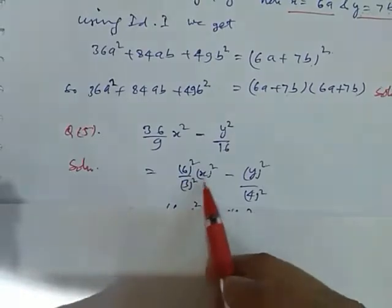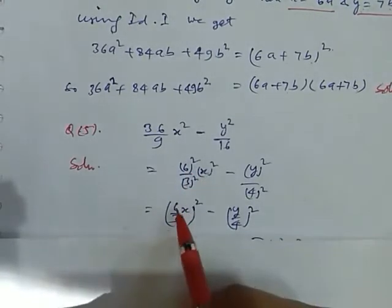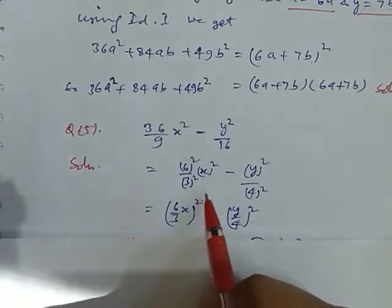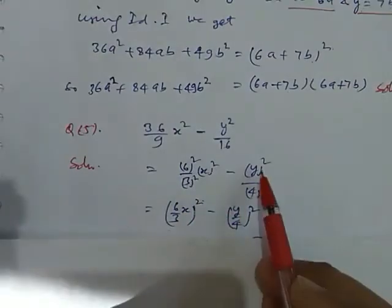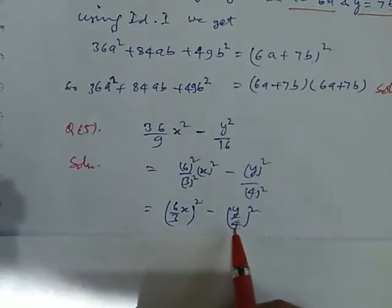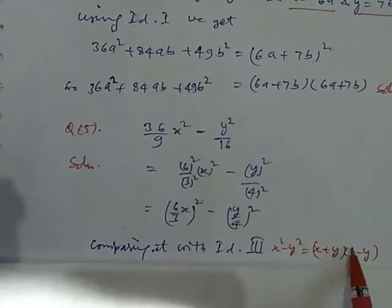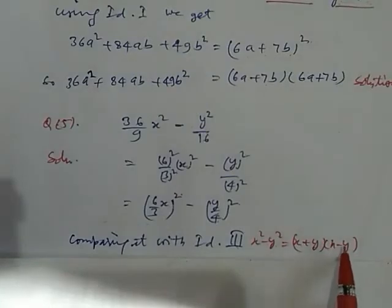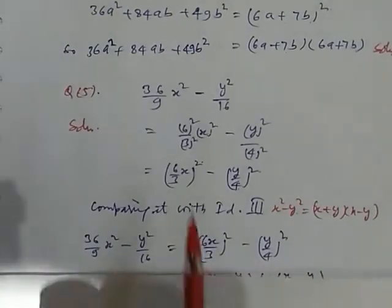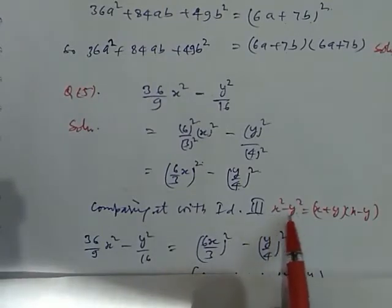Now make this term as a whole square single term. So, how can we convert this? 6 by 3x — this is 6 by 3x whole square. So, write this term as a single term. Here, y by 4 whole square. Now this polynomial reduces as this. Now, comparing it with identity third: x squared minus y squared equals x plus y into x minus y. This is our third identity, which we learned in last session. So, this converted into this form — this square minus this square, comparing by this.